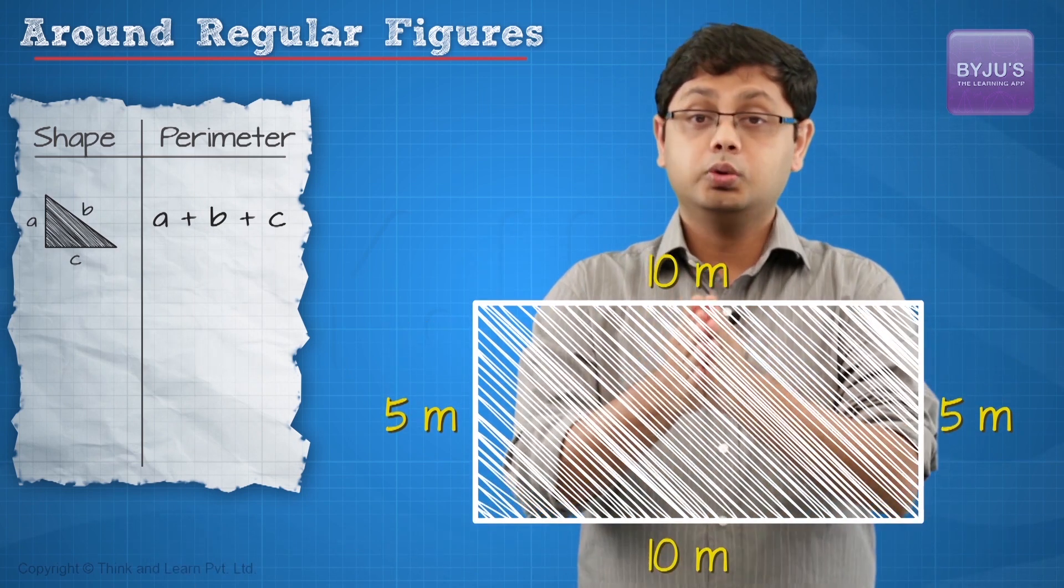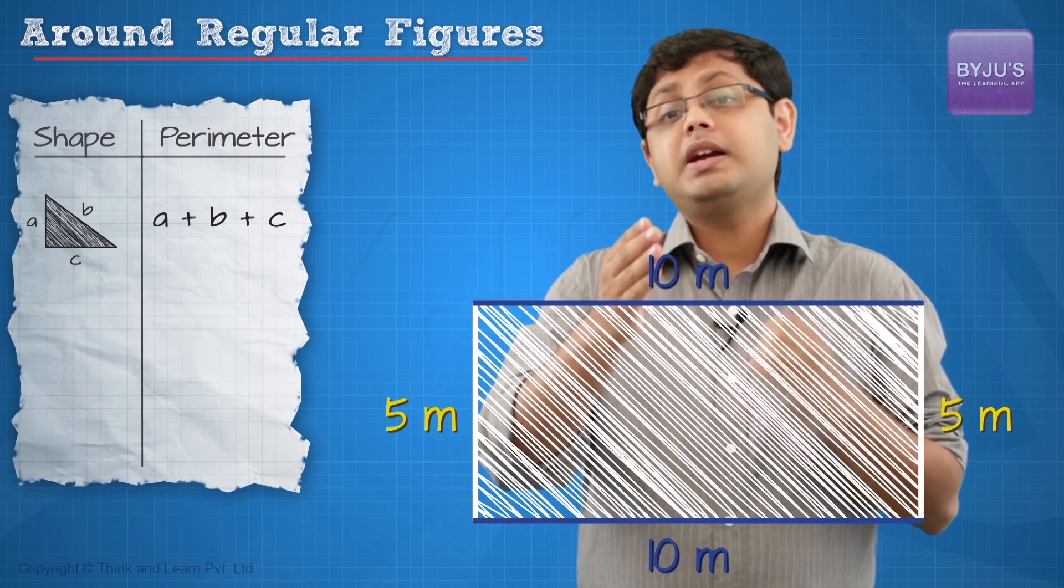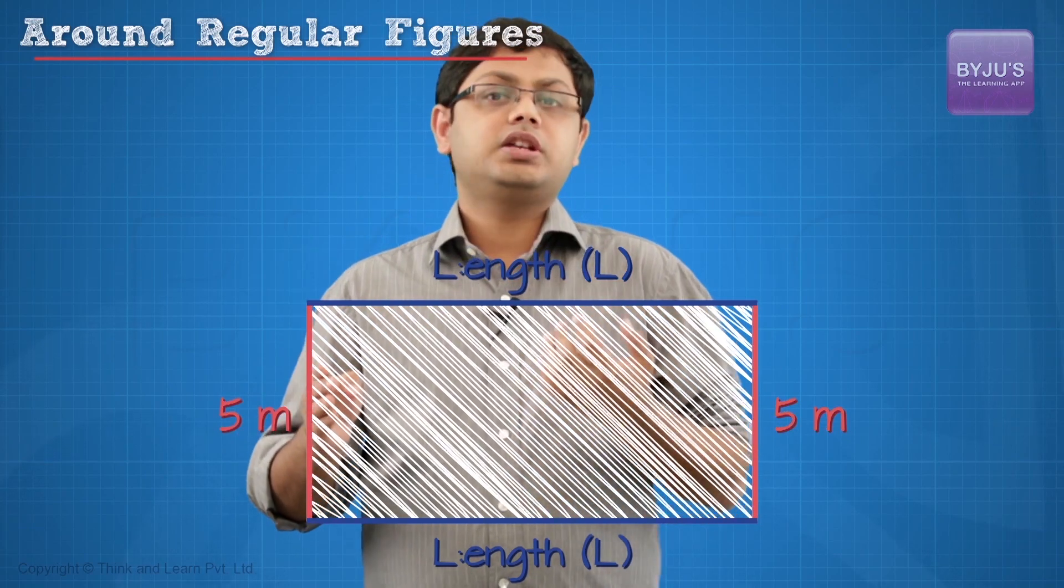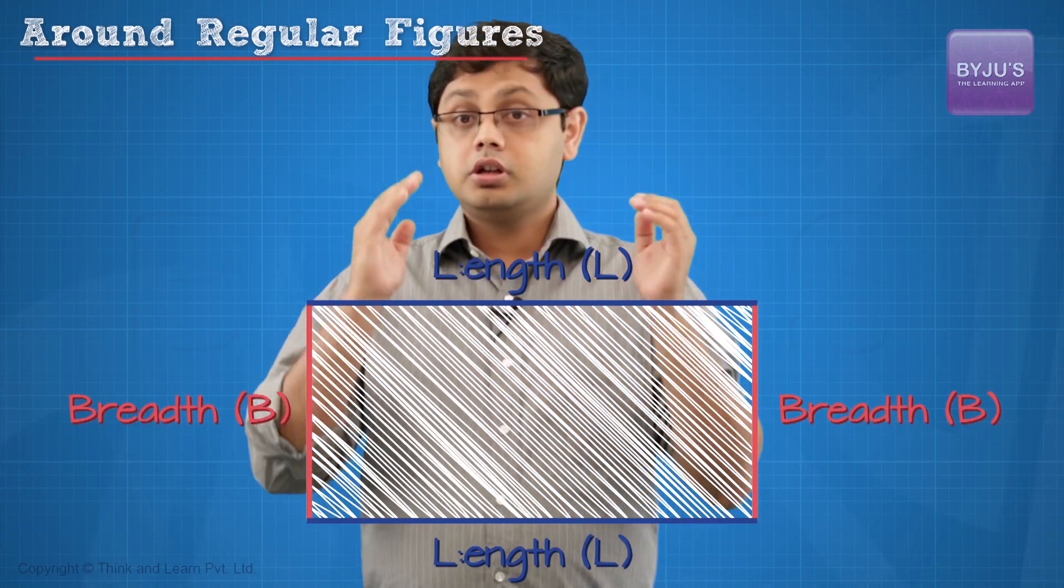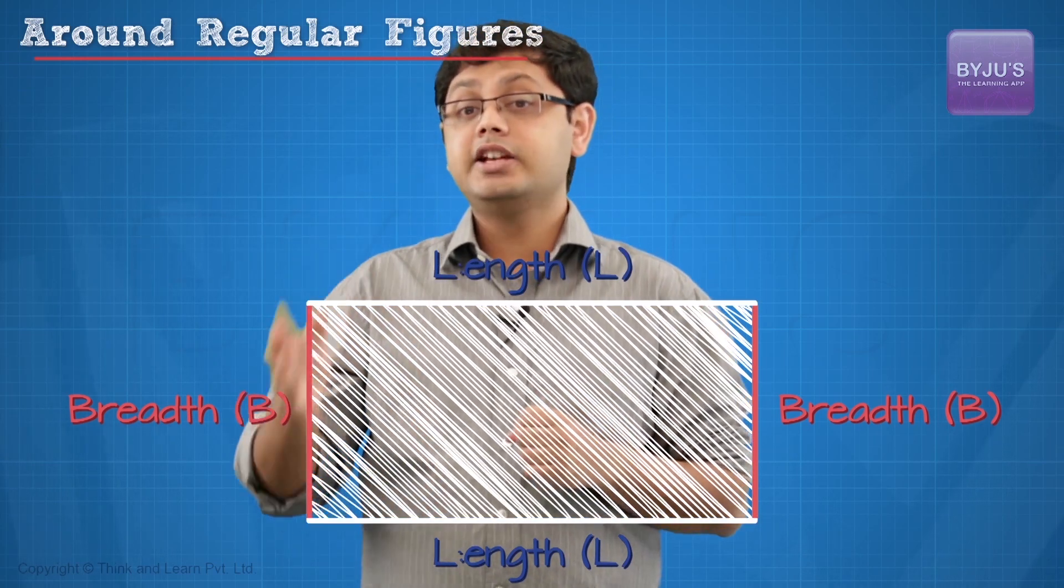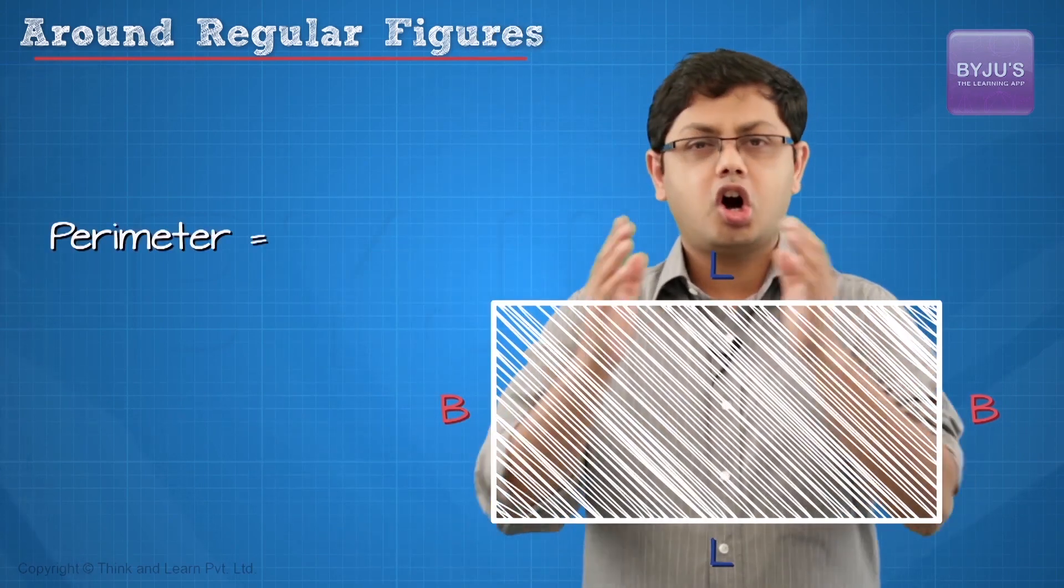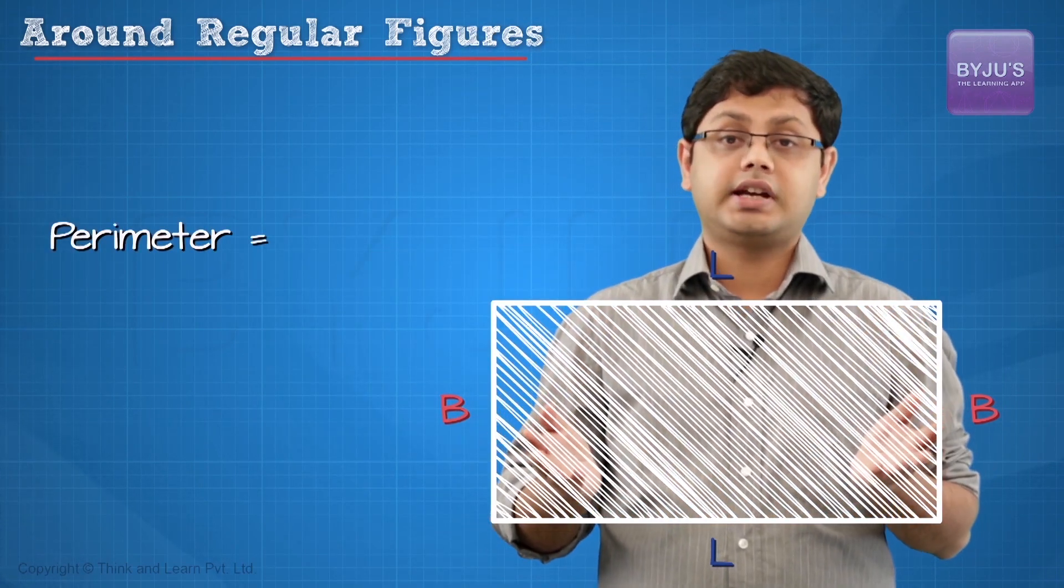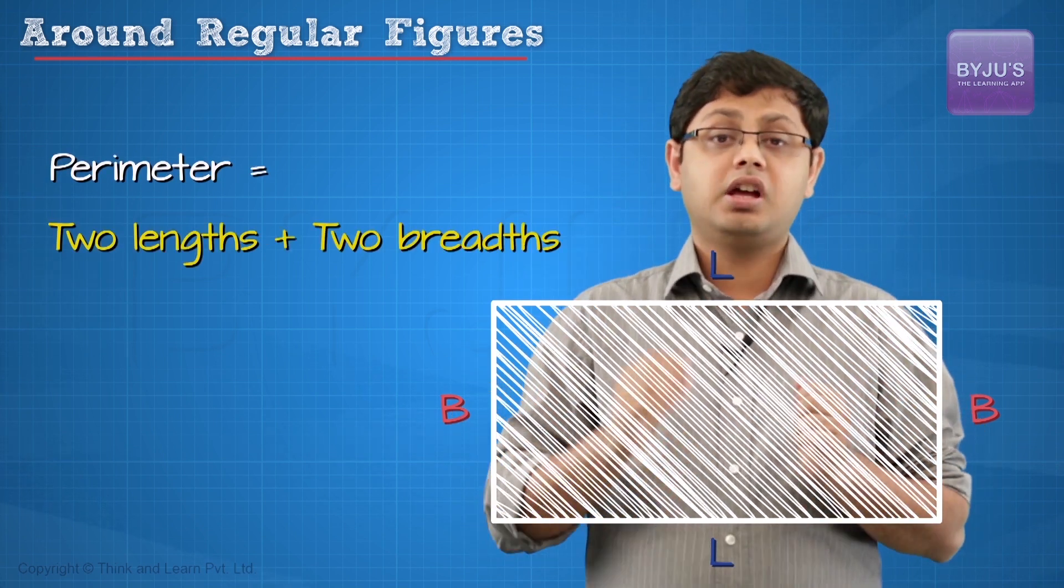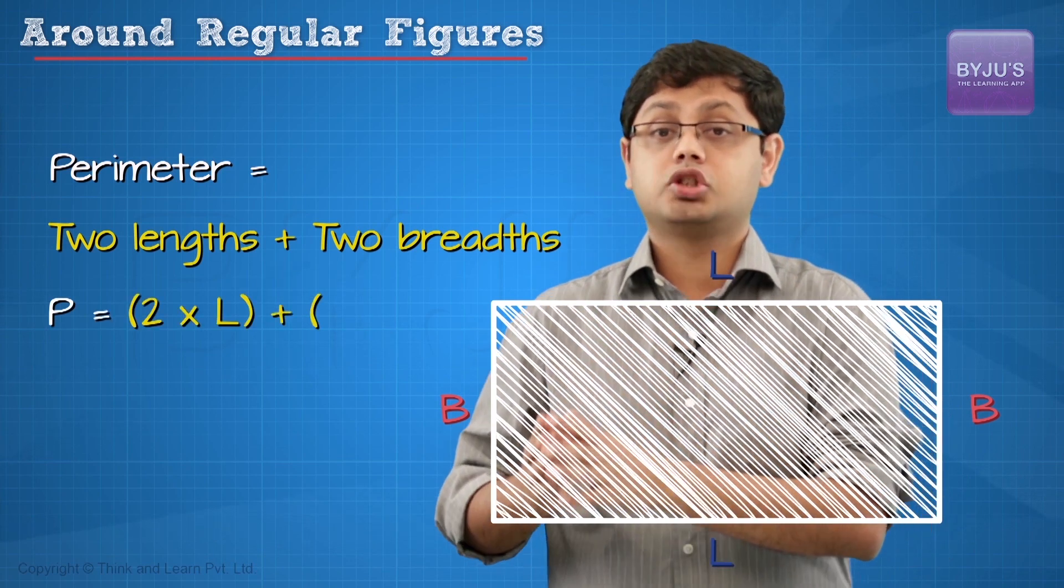Now, to give you a formula to do this easily. For this rectangle, there is a longer side which we typically call length and a shorter side which we typically call breadth. This length is going to be equivalent to this length and this breadth is going to be equivalent to this breadth. To find the perimeter, all that we will have to do is to add up all these 4 sides. That is 2 lengths and 2 breadths. In short, P is going to be equivalent to 2L plus 2B.